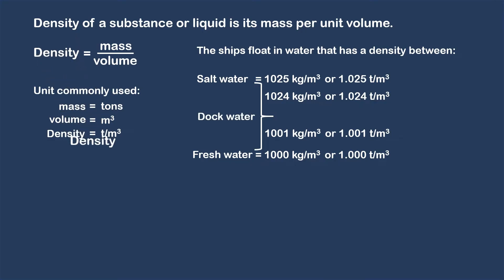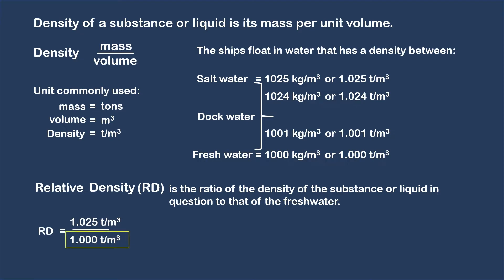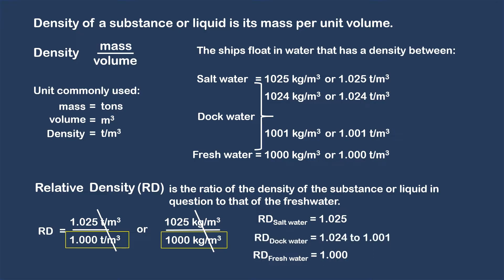We often encounter the term relative density, abbreviated RD. This is the ratio of the density of the substance or liquid in question to that of freshwater. Any liquid divided by the density of freshwater — which is 1.0 ton per cubic meter or 1000 kilograms per cubic meter — gives the relative density. By cancelling both units, relative density has no unit. So the relative density of saltwater is 1.025, for freshwater 1.0, and for dock water it ranges from 1.024 to 1.001.